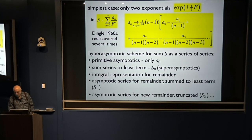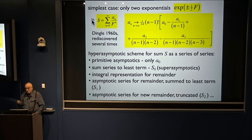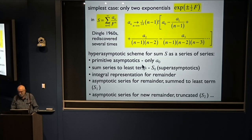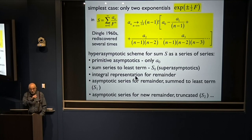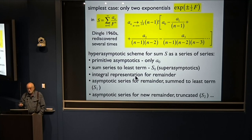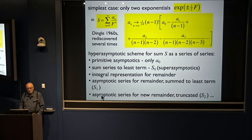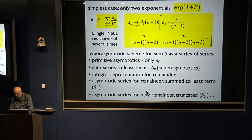Primitive asymptotics — often good enough — you just take the A₀ term. Superasymptotics: sum to the least term. Then you can get an integral representation for the remainder, and you get an asymptotic series for that which you sum to its least term — that gives you S₁, the first correction. Then an asymptotic series for its remainder gives S₂ and so on. I want to illustrate that with the Airy function: I've chosen f equals minus 16, so I'm looking on the dark side.